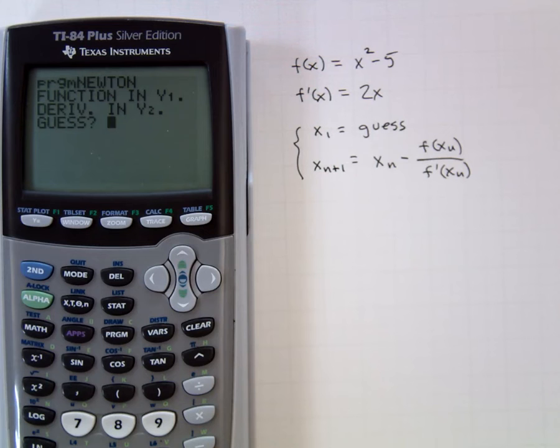We're attempting to estimate the square root of five. Five is between four and nine, so its square root ought to be two point something. I'll try 2.5 just to get the ball rolling.